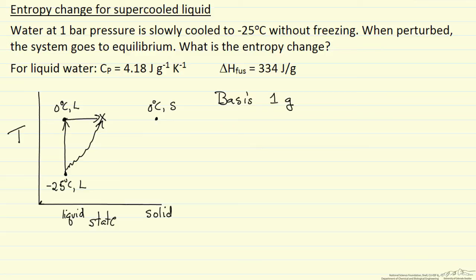Delta H for the actual process is going to be zero because we're going to assume Q is zero because this process happens fast. So once it's initiated very quickly, we're going to have this ice-liquid mixture. The heat transfer is therefore zero. Delta H is zero. So again, we can pick a pathway that makes our calculations easier.